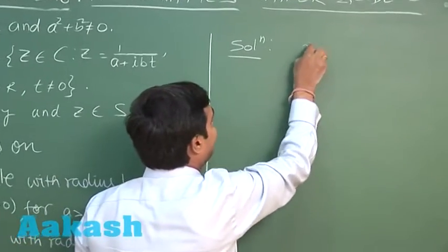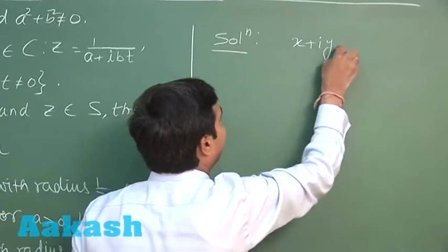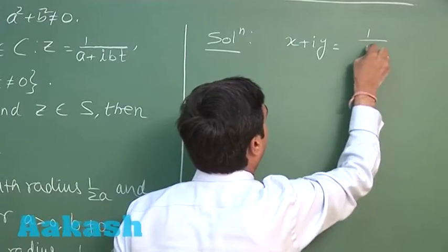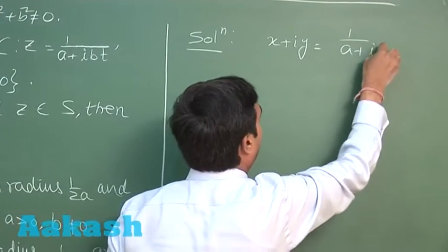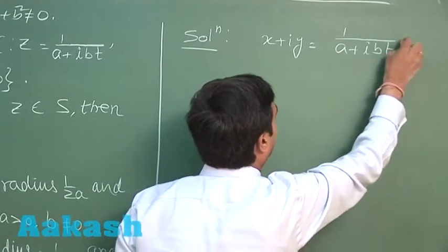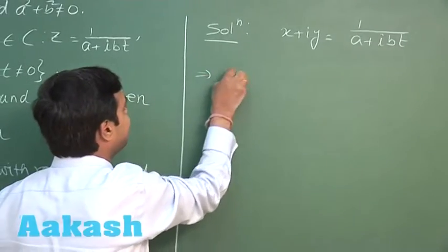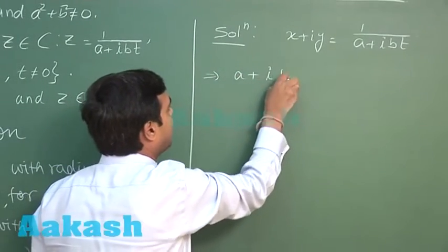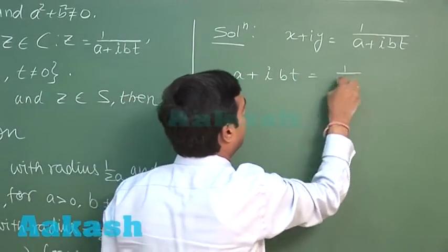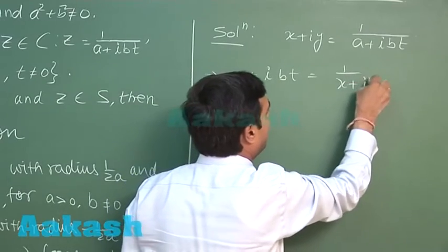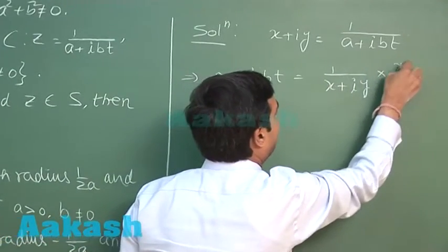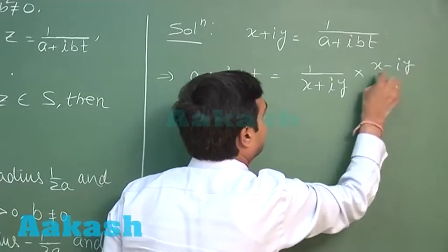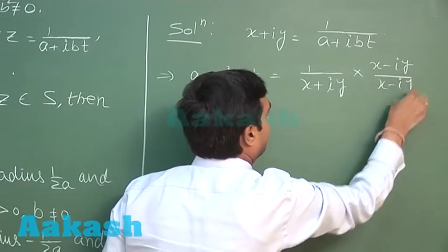z, that is x + iy, is given to me as 1/(a+ibt). I can write it as a+ibt = 1/(x+iy). Rationalize by multiplying by its conjugate.